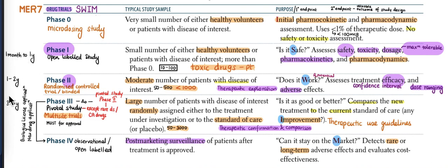Phase 1 goes on for one month to one year, Phase 2 for one to two years, and Phase 3 for three to five years.